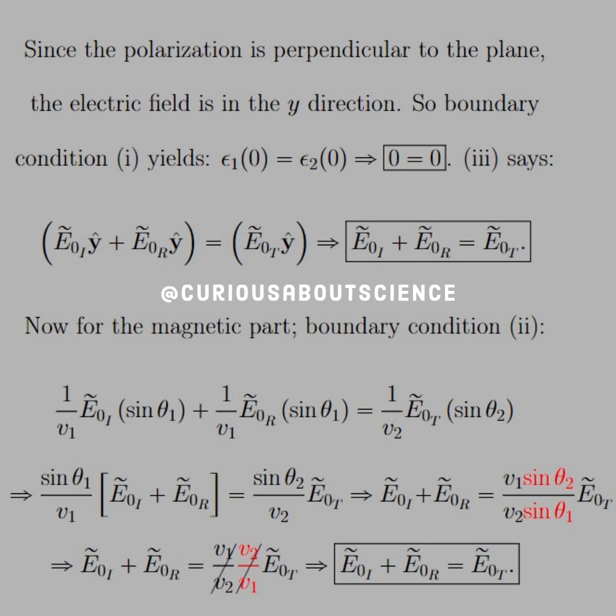All right. Let's go ahead and drive this home. Since the polarization is perpendicular to the plane, the electric field is in the Y direction. So the boundary condition 1 yields epsilon 1 times 0 is equal to epsilon 0 times 0 and 0 equals 0. Good to go there. No worries. But 3 says that we have X and Y. So now we just need to incorporate the fact that our X component is 0 but our Y component isn't. So we have all the coefficients here, thus showing that we have E naught I plus E naught R equal E naught T.